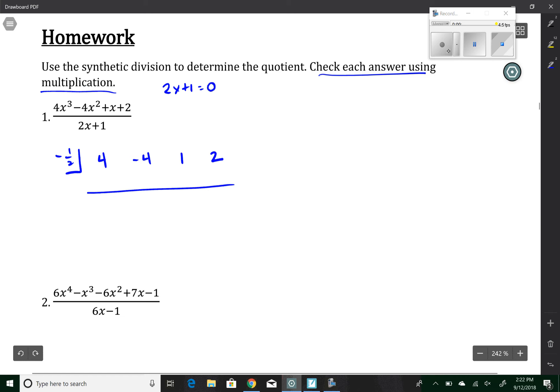The 4 comes down. Negative 1 half times 4 is negative 2. That becomes negative 6. Negative 1 half times negative 6, that's going to be a positive 3. That becomes a 4. Negative 1 half times 4 becomes negative 2, giving me that remainder of 0.